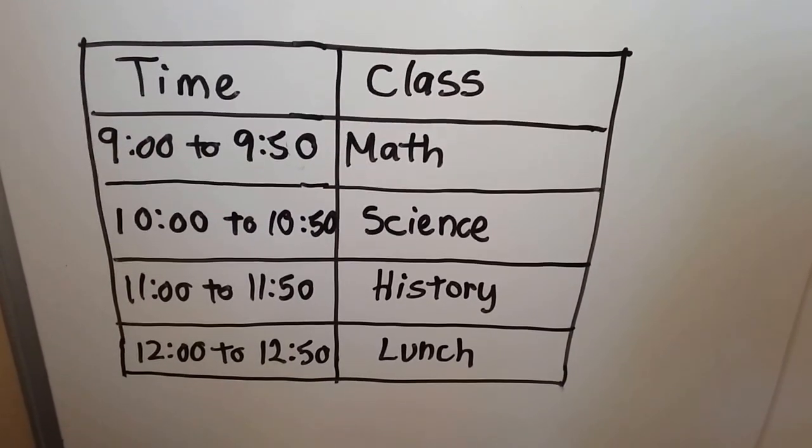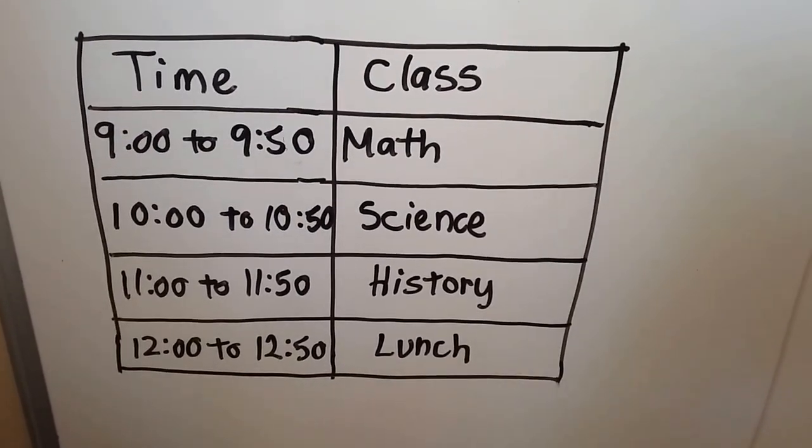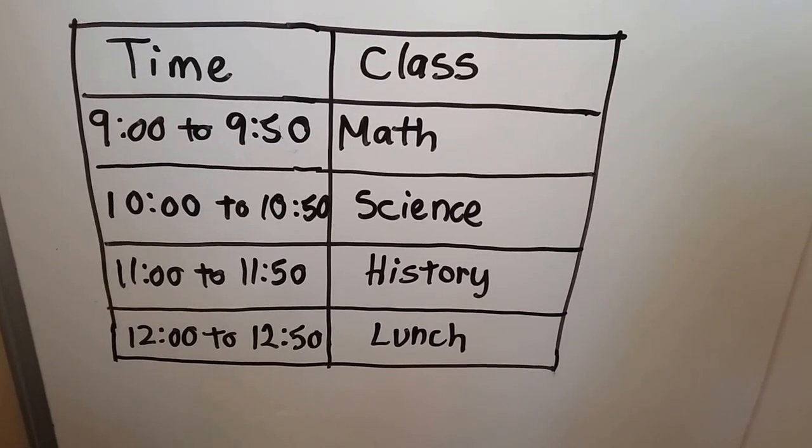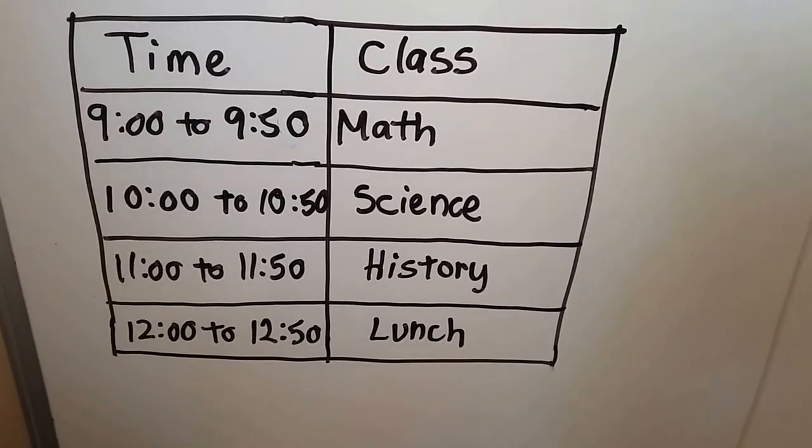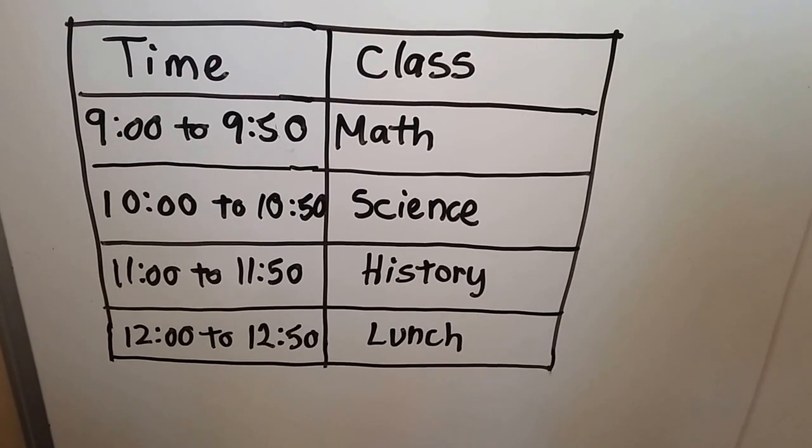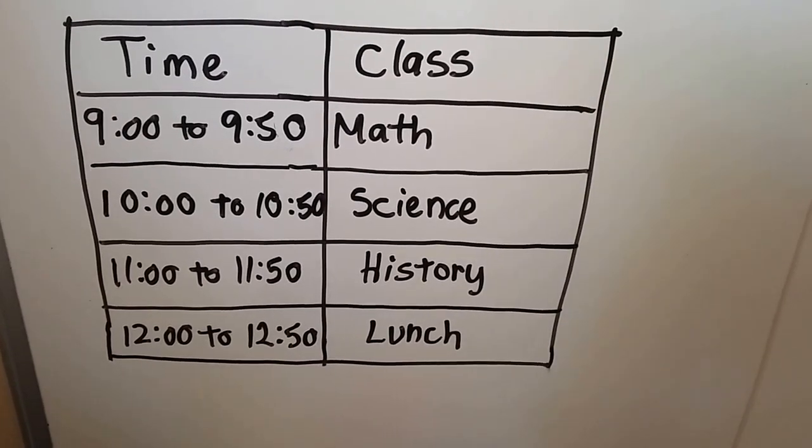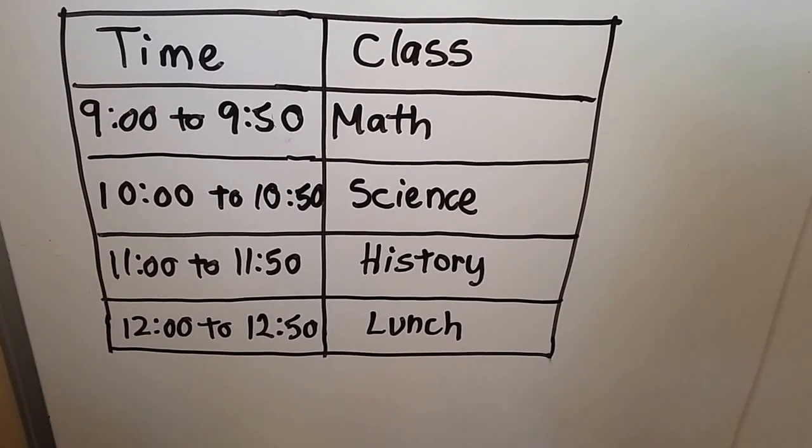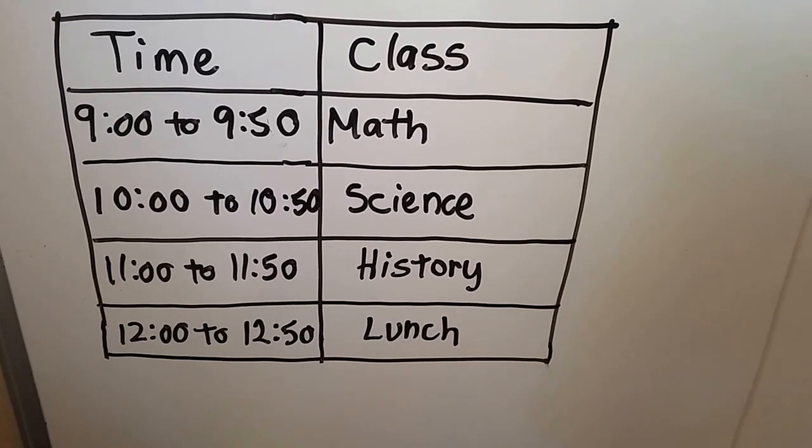You can see from this schedule that math starts at 9 o'clock, science starts at 10, history starts at 11, and then lunch starts at 12. You can even see when each class is going to end and when lunch is going to end, 10 minutes before the next hour.